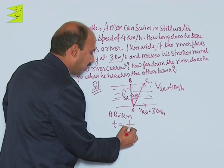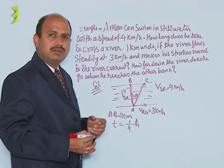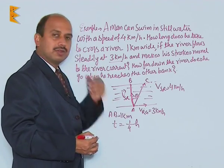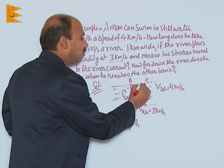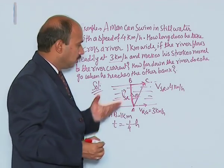So we can write 1 by 4 hour. This is the time taken by the swimmer to cross the river. But now you have to find out this distance, how much he has travelled along the river.